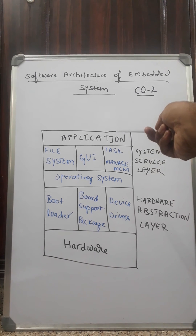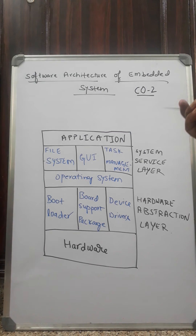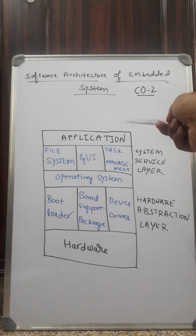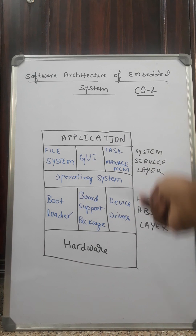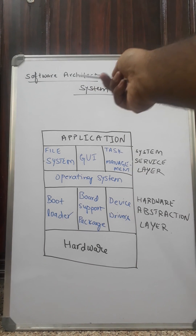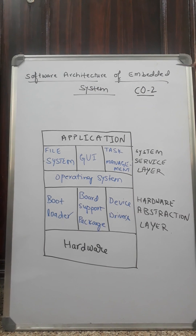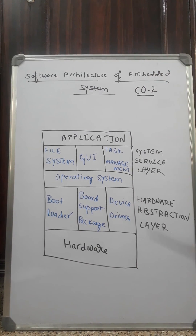Coming to the application layer, it is the software utilized by the user to carry out its applications. So, these are the different layers in the architecture of the software of an embedded system.